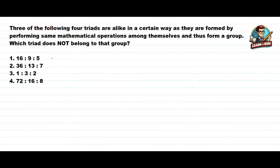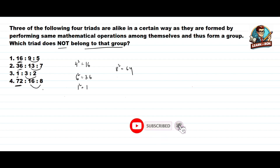Let's see the next question — an odd one out question. We need to find the option which does not belong to the group. First option: 9 minus 5 is 4, and 4 squared is 16, which is the first number. Next: 13 minus 7 is 6, squared gives 36 — matches. Next: 3 minus 2 is 1, squared is 1 — matches. Now 16 minus 8 is 8, and 8 squared is 64, but they've given 72. So option number 4 is the answer.